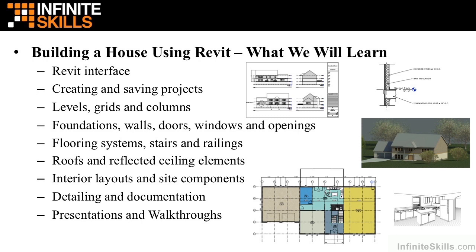After we have our beams, our foundation, and our columns placed, we will start to place the rest of the walls for the house — both the exterior walls and interior walls. With the walls placed, we will drop in floor systems, or different types of floors. We will then create doors, windows, and openings within our walls. We will place stairs and add railings to stairs.